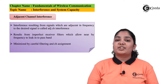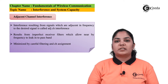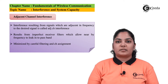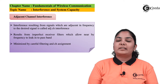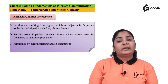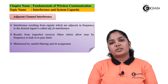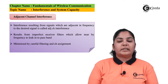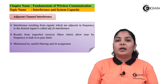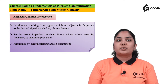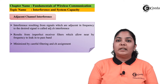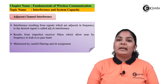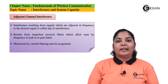Adjacent channel interference occurs because of channels adjacent to the desired frequency signal. For example, if the desired frequency is 10 kHz, there is interference from a signal at an adjacent frequency such as 11 kHz. This occurs because the filters used in the receiver are not functioning properly — they allow the passband but also let nearby frequencies enter the signal.